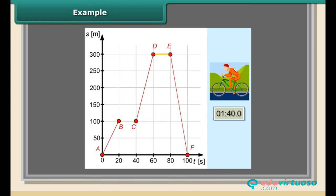Segment DE shows the cyclist stopped for 20 seconds. Then, from segment EF, we can discover that the cyclist turned back and, after 20 seconds, reached the location which he started his journey. He was moving with a constant speed of 15 meters per second.